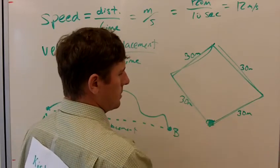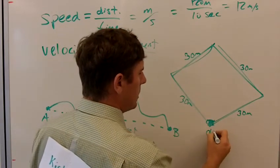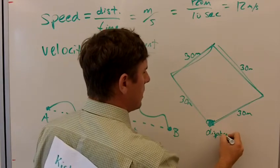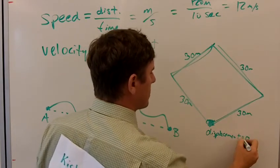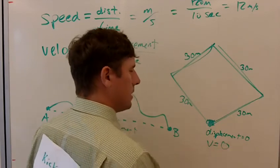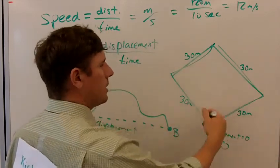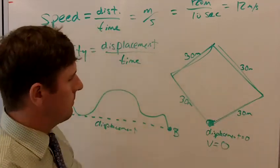And the answer right there is zero. His displacement is zero because he starts and ends in the same place, so the velocity in this case is zero because he doesn't end anywhere different from where he starts.